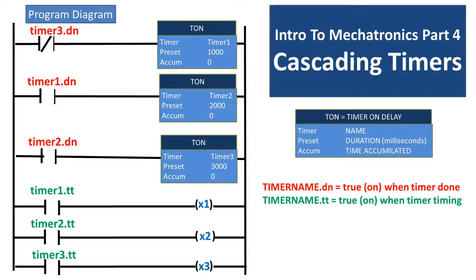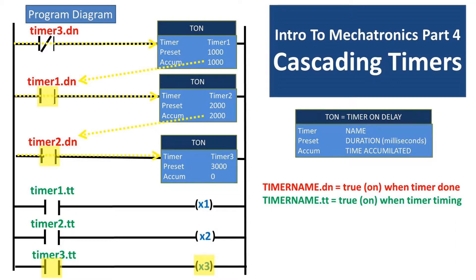Below the cascading timers, I have three normally open contacts with three different timers. I used a .tt after the timer's name, which means that it is true or on when the timer is timing. The timer1 timing rung will run for 1 second, the timer2 timing rung will run for 2 seconds, and the timer3 timing will run for 3 seconds, or whatever the presets you have for each timer.